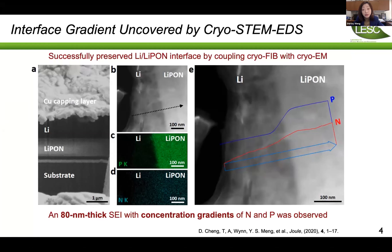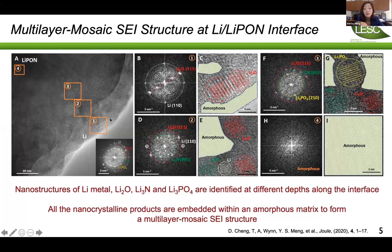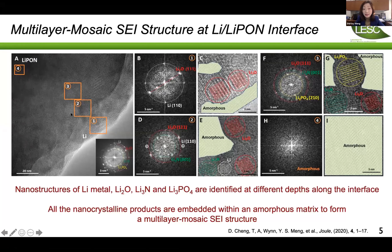For the first time, we observed an 80 nanometer thick interface between lithium and LiPON. This interface is not as simple as imagined — it consists of a mosaic structure of lithium, lithium oxide, lithium nitride, and lithium phosphate, accompanied by many amorphous phases. On the lithium side, some crystalline lithium phases can be seen, but quite a lot of amorphous regions are present too.